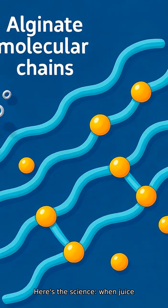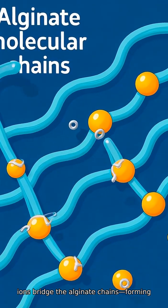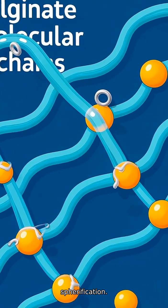Here's the science. When juice with alginate meets calcium ions, those ions bridge the alginate chains, forming a thin gel skin in a process called spherification.